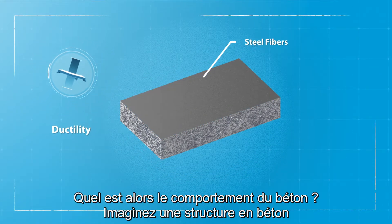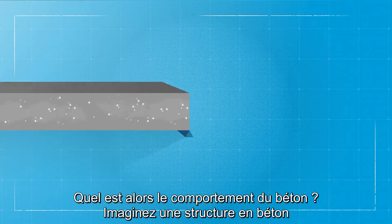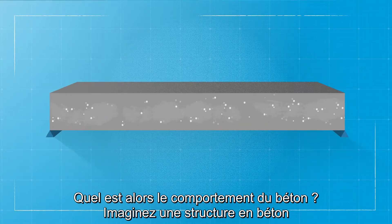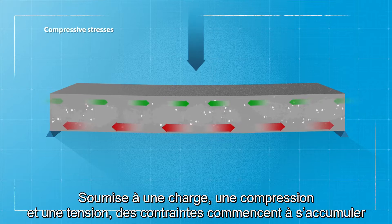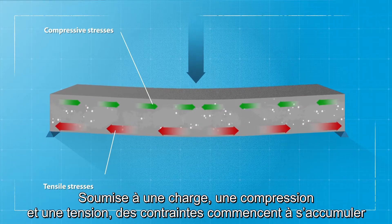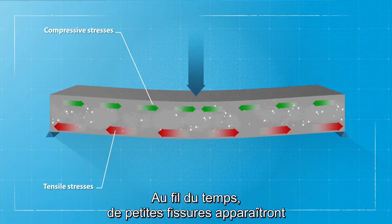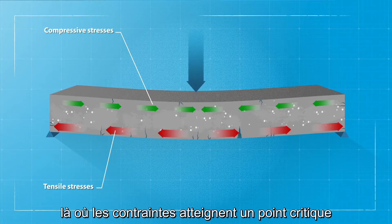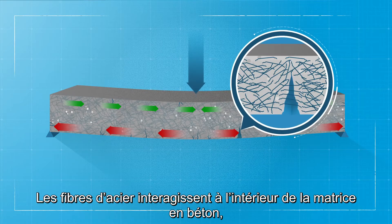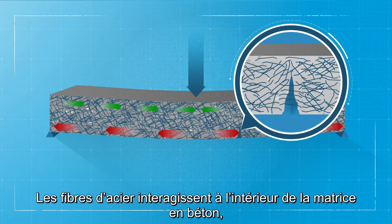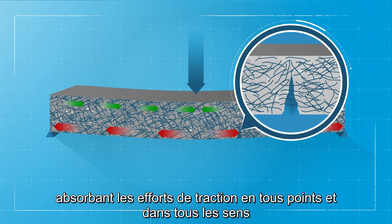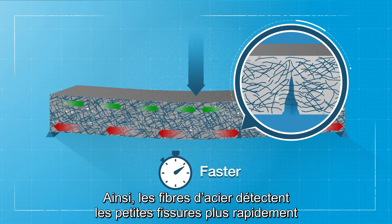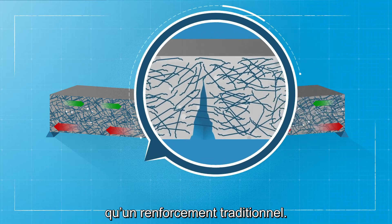So, how does this translate into concrete behavior? Take a random concrete structure. When subjected to loading, compressive and tension stresses start to build. Over time, small cracks will appear in places where the stress reaches a critical point. Steel fiber interacts within the concrete matrix, absorbing tensile stresses at any point and in any direction. As a result, steel fiber picks up small cracks much faster than traditional reinforcement.